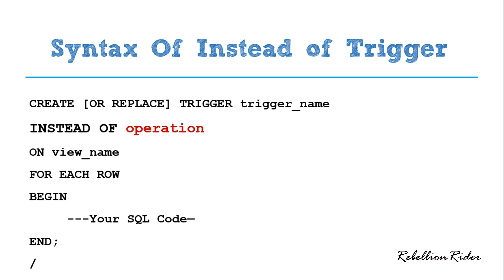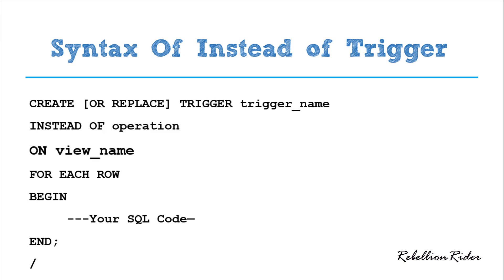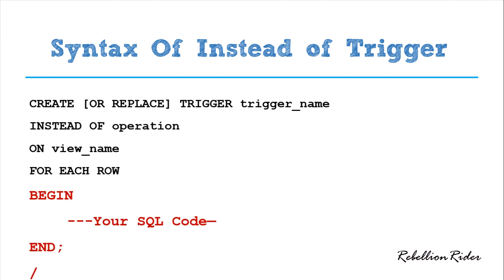In the second line we have the reserved phrase INSTEAD OF, followed by the operation, which could be either INSERT, UPDATE, DELETE, or MERGE. In the next line we supply the name of the view using the keyword ON, over which you want your trigger to work. Next we have the FOR EACH ROW clause, which makes your trigger execute once for each row that is inserted, updated, or deleted. Then we have the PL/SQL block.